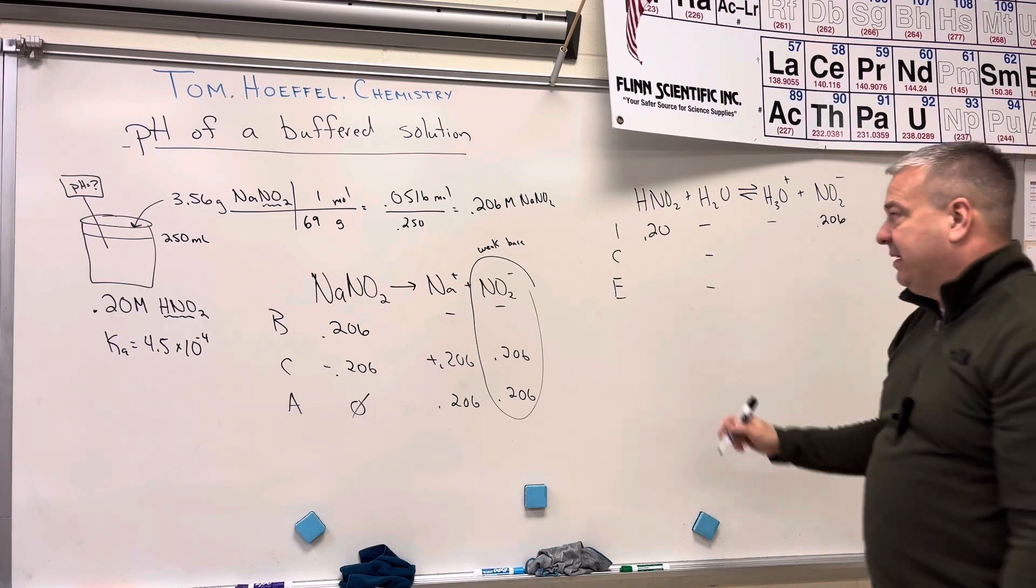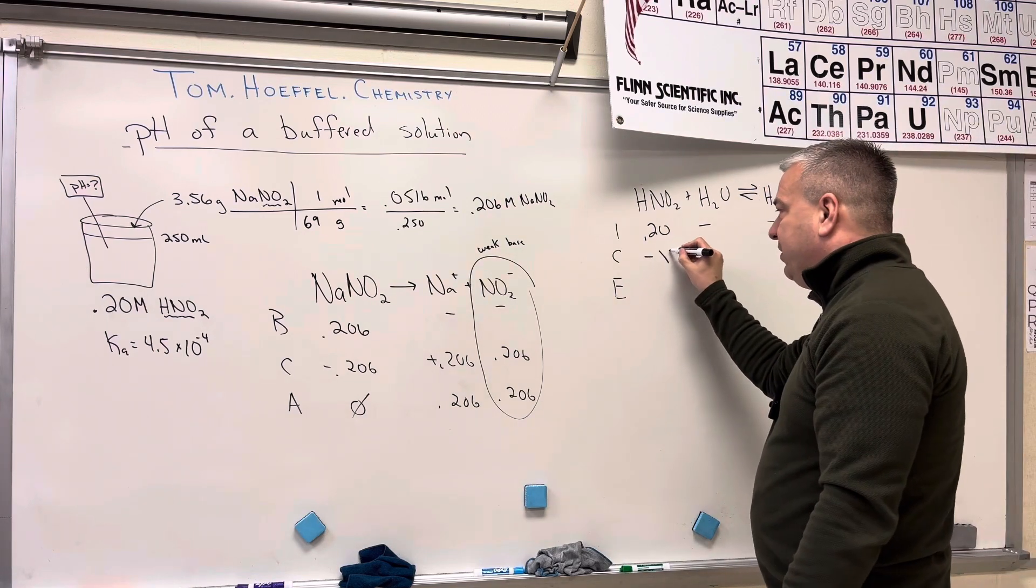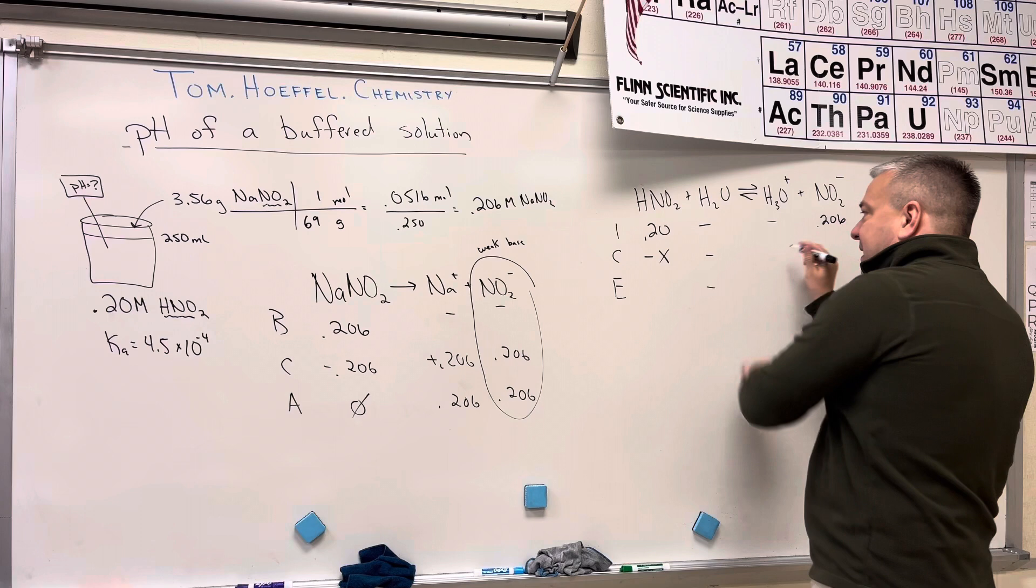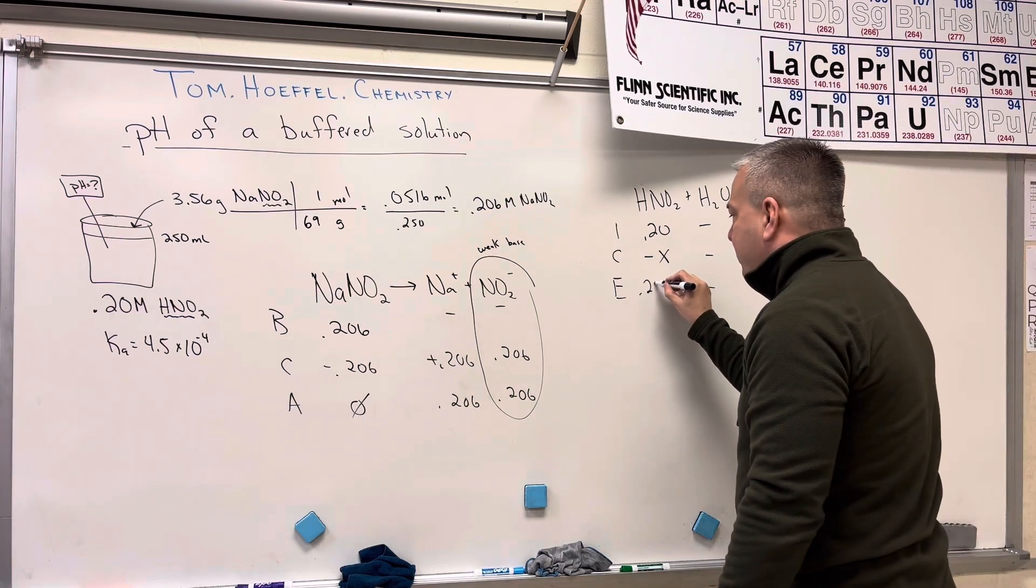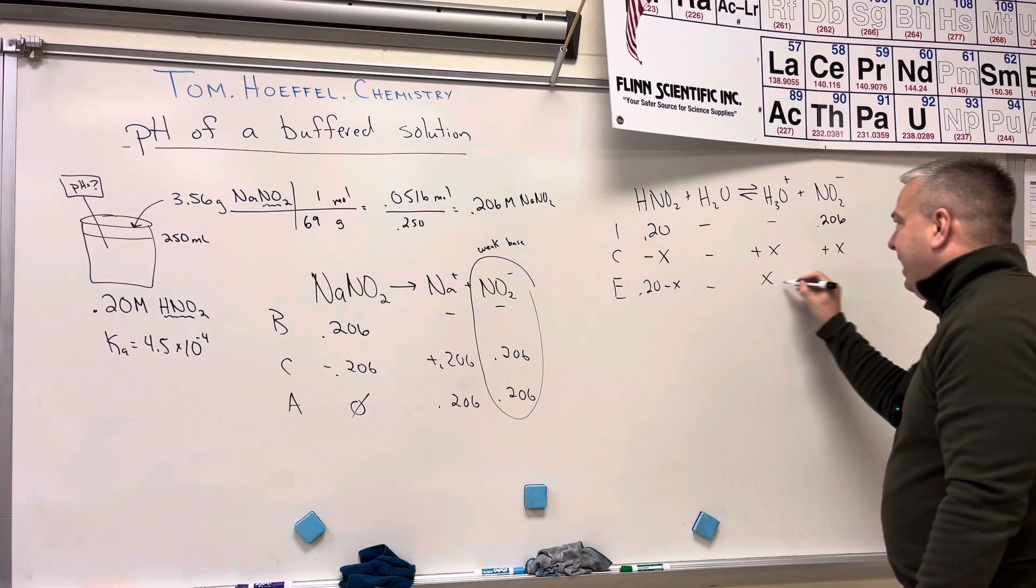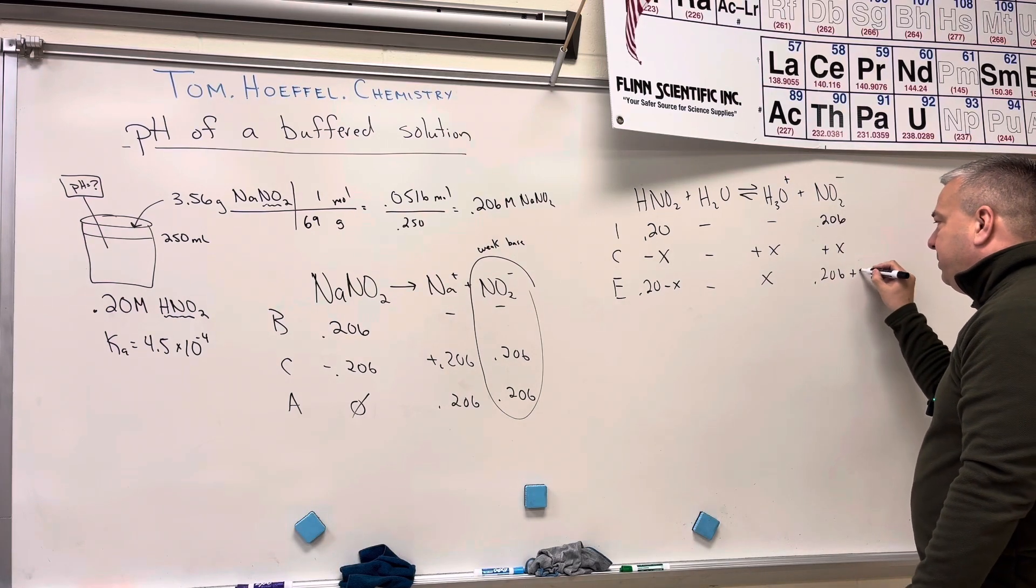Well, from here, it's really easy to solve, right? This is going to shift to the right. So this is going to go down X. And these are going to go up X. I'm going to get 0.20 minus X, X and 0.206 plus X.